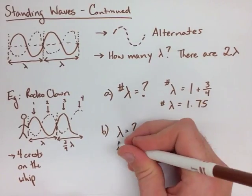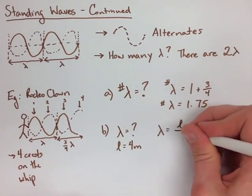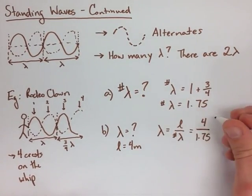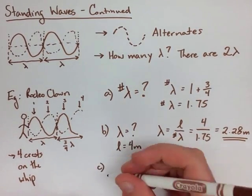In the next two parts, we're looking for the length of the wavelength and for the frequency that the wave's happening. For the length, all we have to do is take the length of the total rope, divide it by the number of wavelengths there are, and we get the length. It's 2.28 meters.